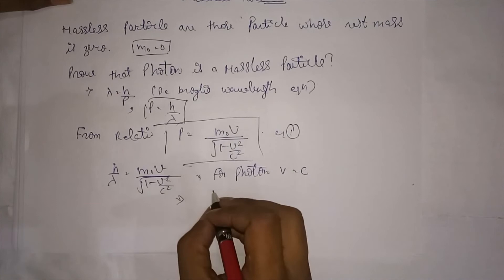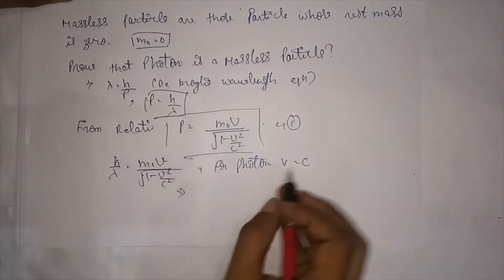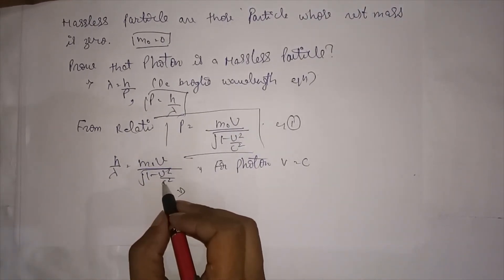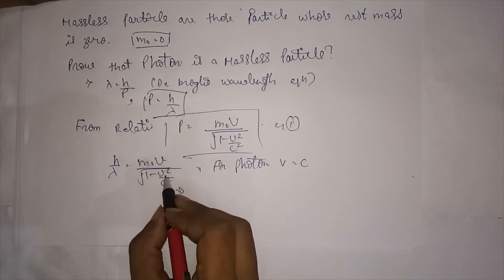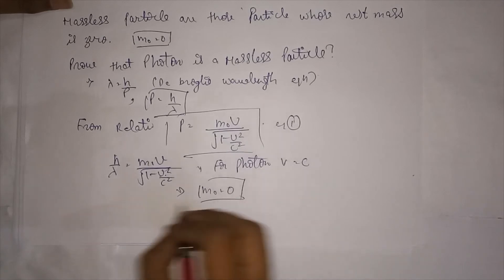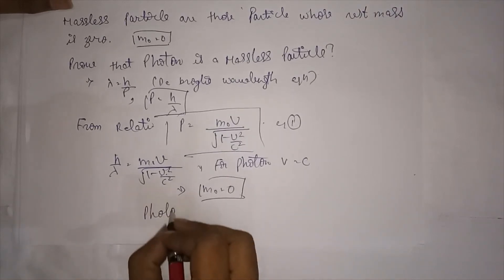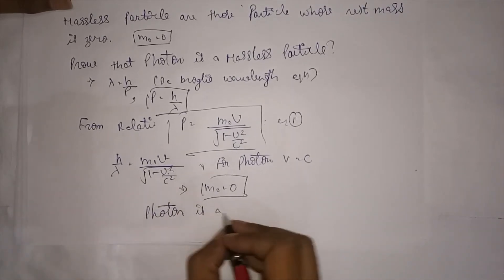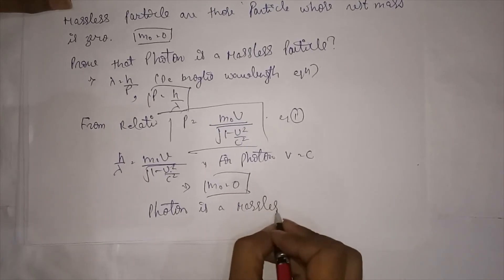Implies when we put v equal to c, they cancel out each other and 1 minus 1 becomes 0. So we will get m0 equal to 0. Implies photon is a massless particle.